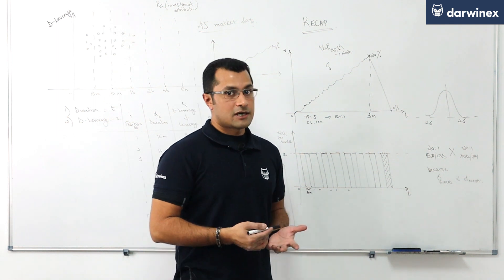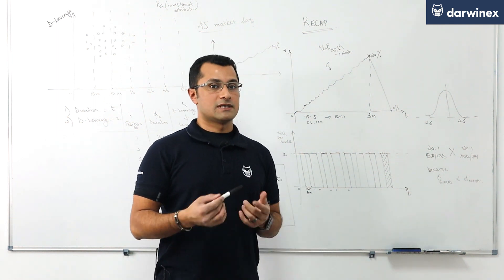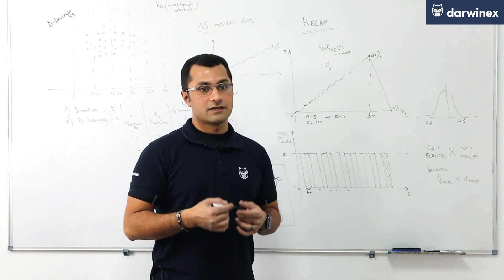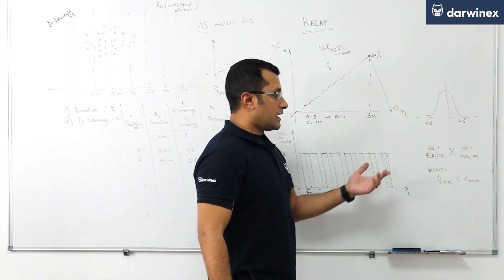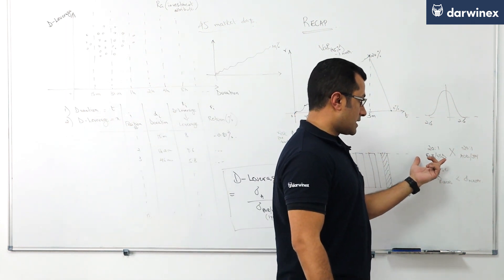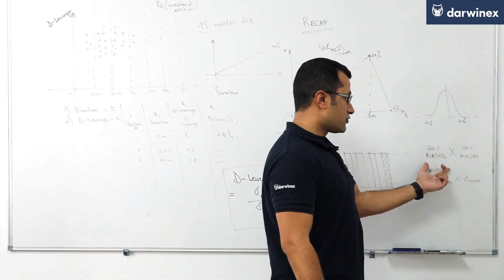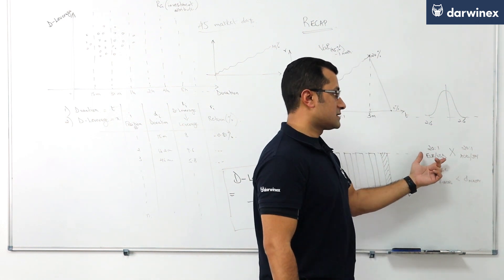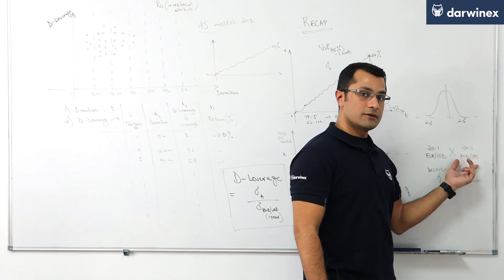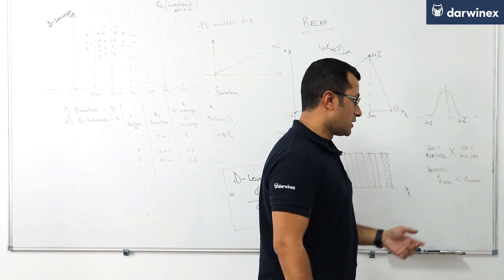So this motivated the discussion of some additional concepts such as leverage and the volatility of the instrument being traded. We talked about how it is simply not the same thing to say that a 20 to 1 leveraged trade on the euro dollar is the same as a 20 to 1 leveraged trade on the Aussie dollar Japanese yen for example. Why?